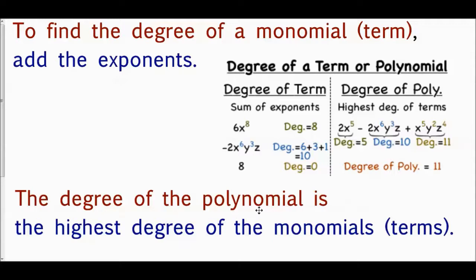To find the degree of a polynomial — which is several monomials or terms put together — it is the highest degree of the monomials. For the expression two x to the fifth minus two x to the sixth y to the third z plus x to the fifth y squared z to the fourth, the degrees are five, ten, and eleven respectively. So the degree of that polynomial is eleven — the highest degree of any of the monomials.